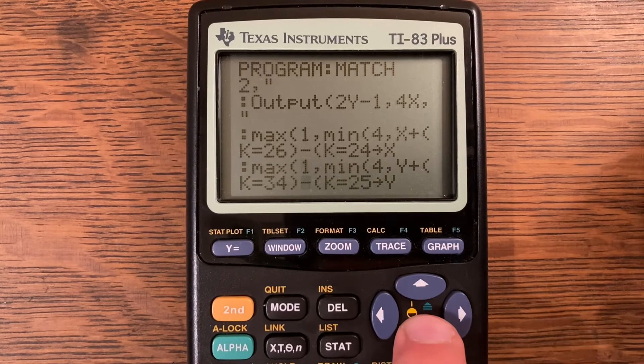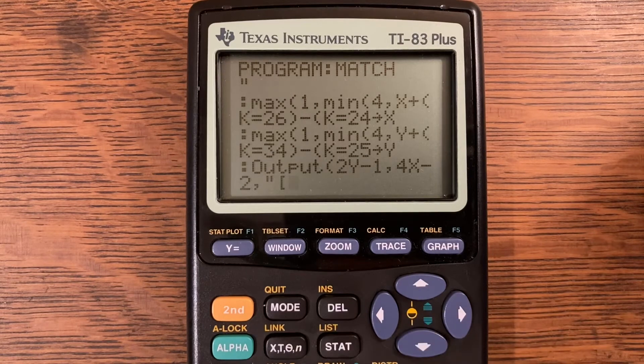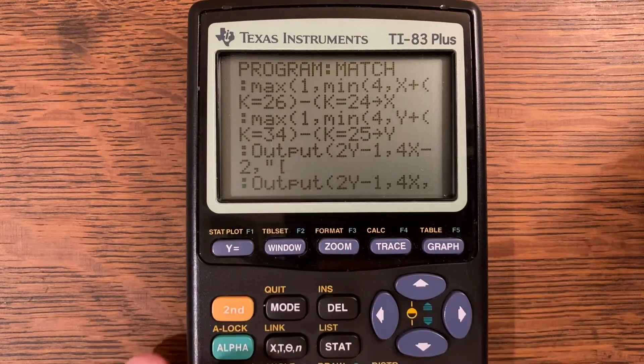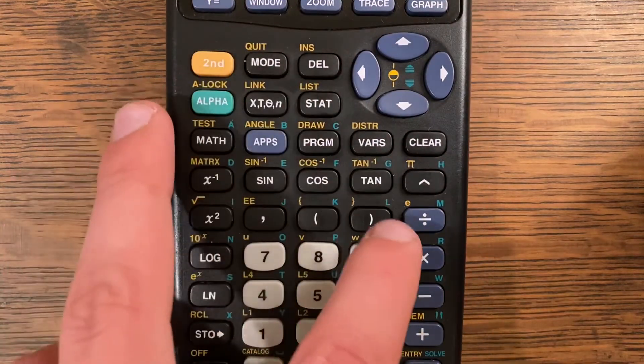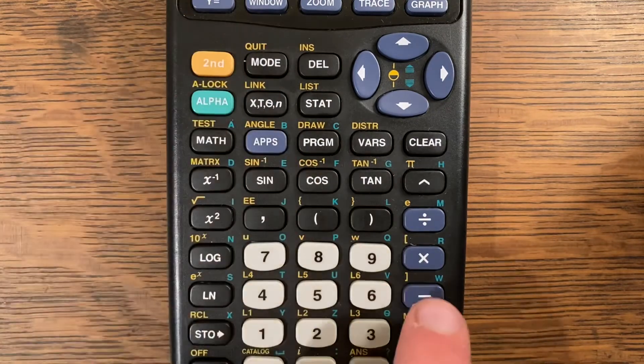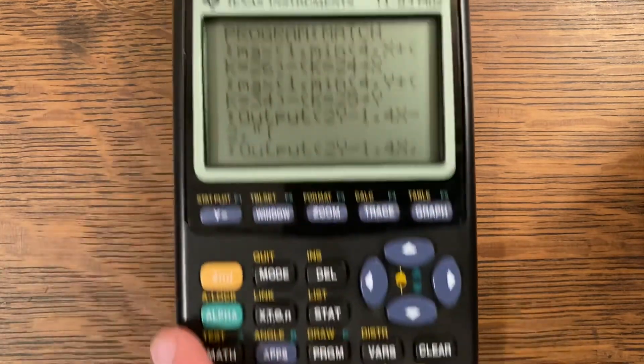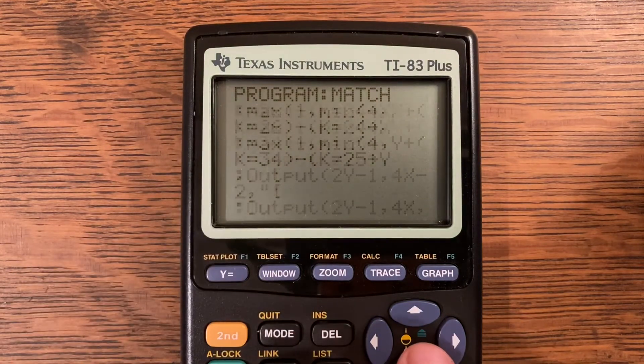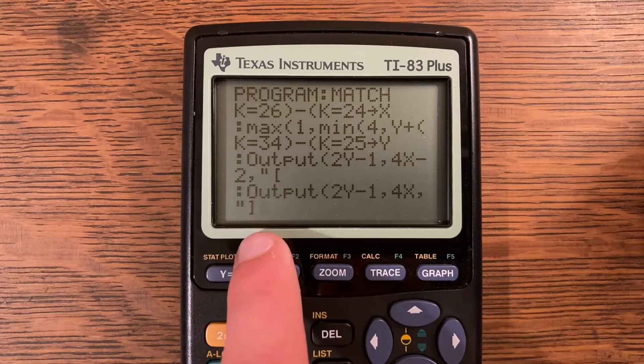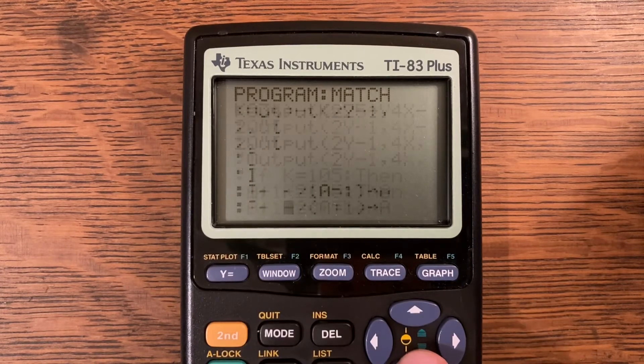Output 2Y minus 1 comma 4X minus 2 comma quote the bracket right there, which can be found by clicking second and the multiplication key. The one we'll use in just a second is the minus key right below that multiplication key. Output 2Y minus 1 comma 4X and then that bracket right there.